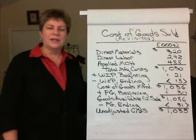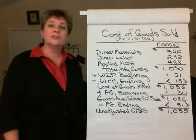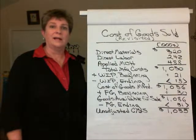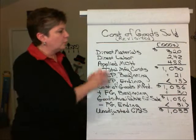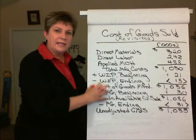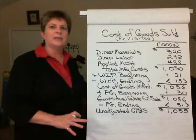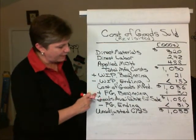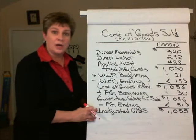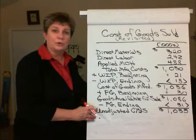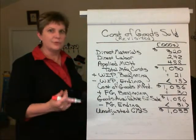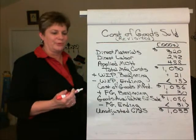Managerial Accounting. Adjusting Cost of Goods Sold for Over or Under Applied Manufacturing Overhead. What we're looking at here is a combination of the Cost of Goods Manufactured and Cost of Goods Sold calculations into one schedule, just for space purposes.